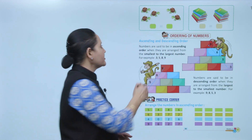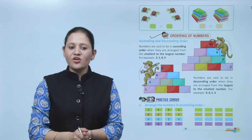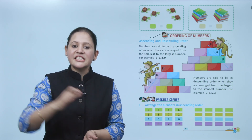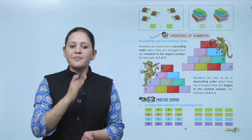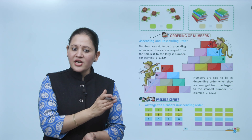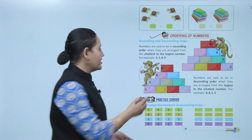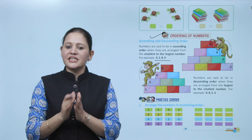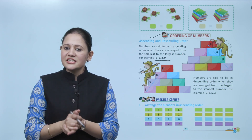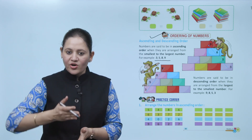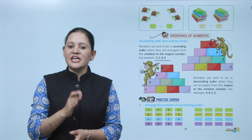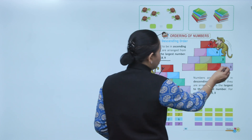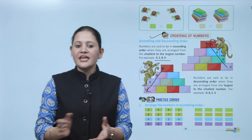Next: ordering of numbers. Ascending order — numbers are said to be in ascending order when they are arranged from smallest to largest, meaning increasing order. For example: 3, 5, 8, 9 — start from 3, then 5, then 8, then 9. Descending order — numbers are arranged from largest to smallest, meaning decreasing order. For example: 9, 8, 5, 3.